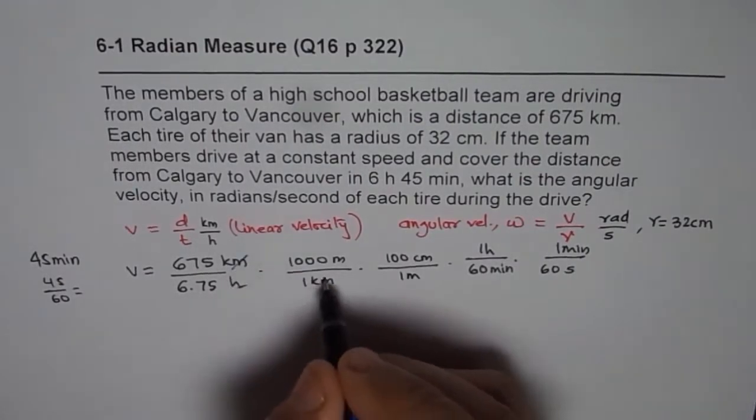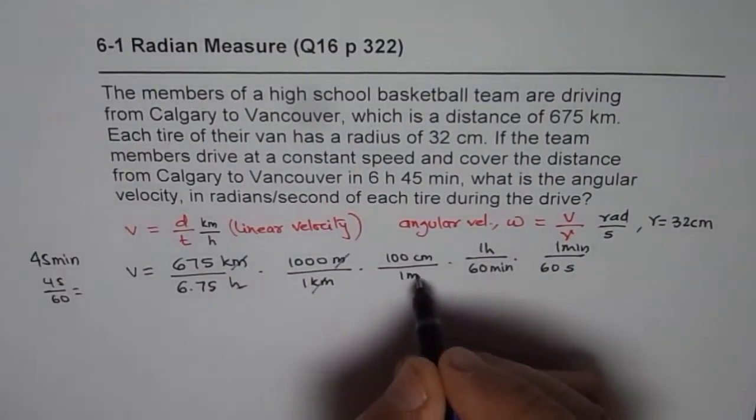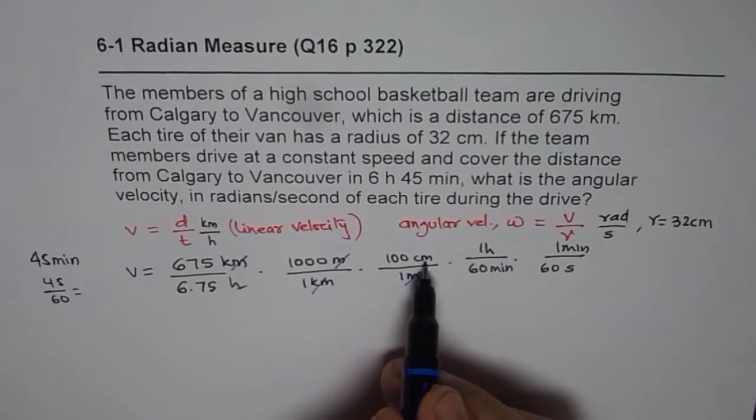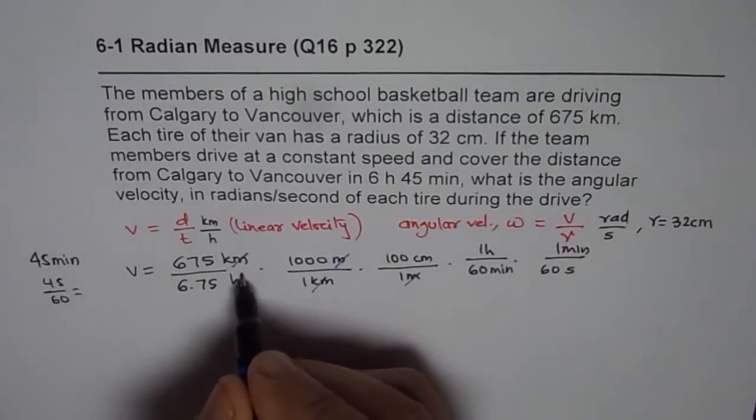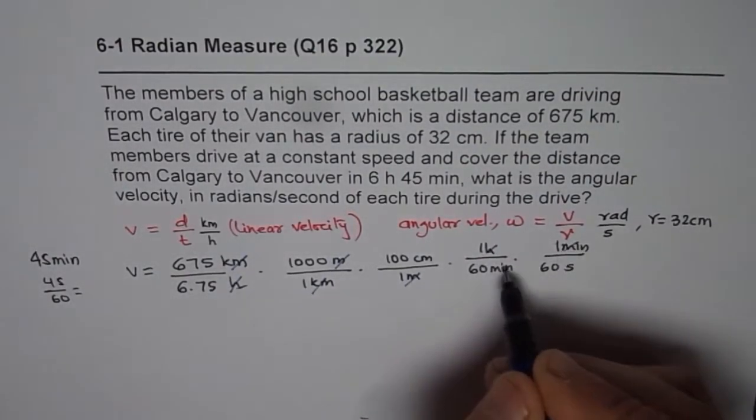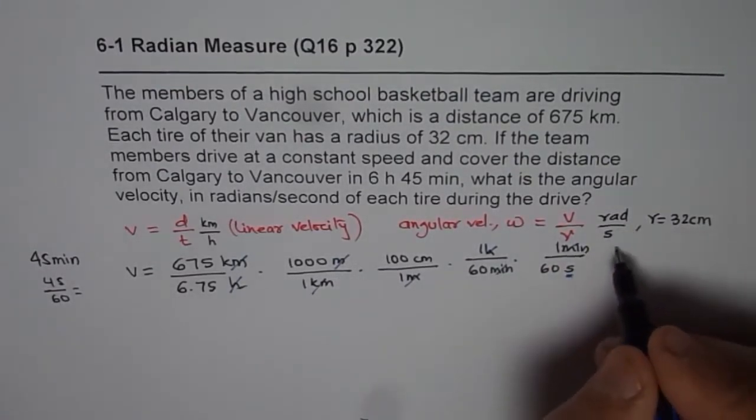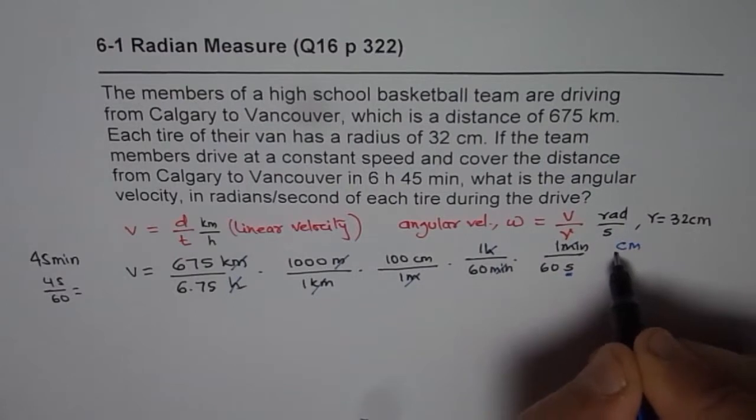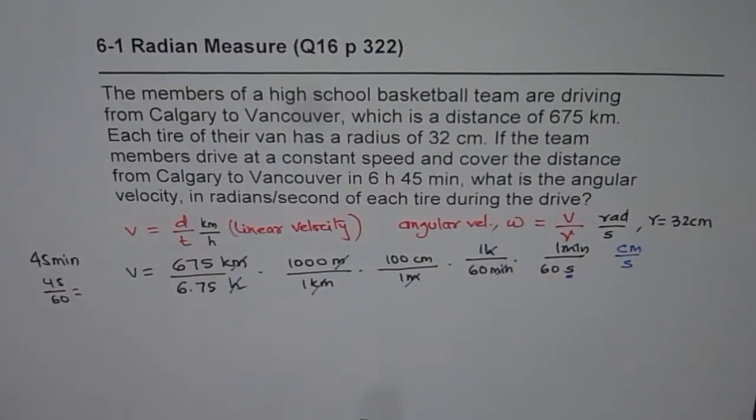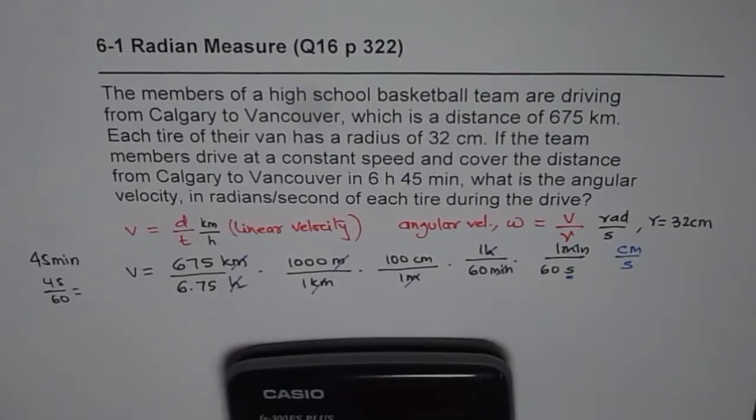If you do like this, you take care of the units. Kilometer cancels off. Meter cancels off. You are left with centimeters. In time, hours and hours cancel. Minutes and minutes cancel. You have got seconds. So finally, you have units centimeters per second.